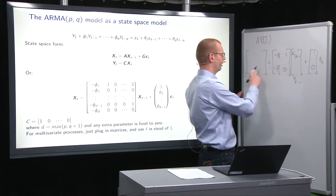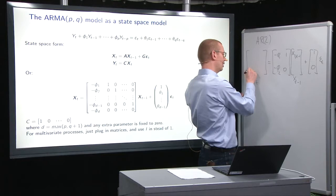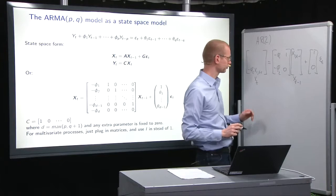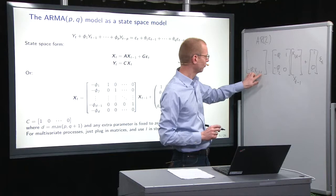So, given this number up here, we can see what are we going to get in the second element at time t. We're going to get minus phi_2 of this one up here, so minus phi_2 x_1_{t-1}.